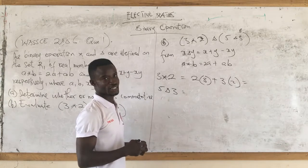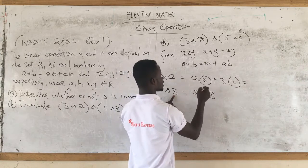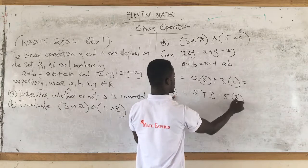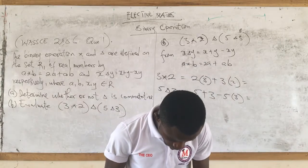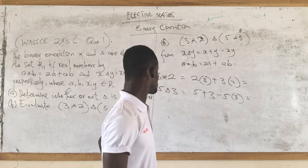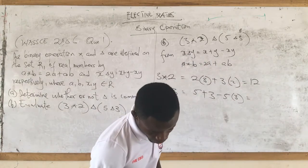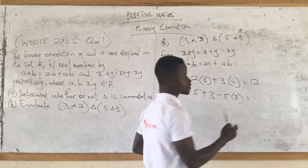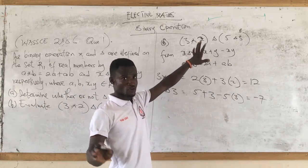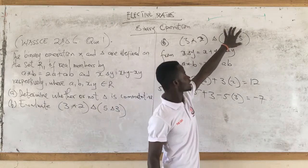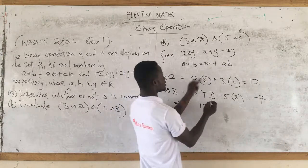Now for 5 delta 3, since it's delta we use x plus y minus xy, where x represents 5 and y represents 3. So it's 5 plus 3 minus 5 times 3. This gives us negative 7. So 3 star 2 equals 12 and 5 delta 3 equals negative 7.